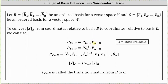The right side is a composition of matrix transformations, which are performed from right to left. Notice how first we're converting from basis B to basis S, and then from basis S to basis C, which does give us the transition matrix from B to C.